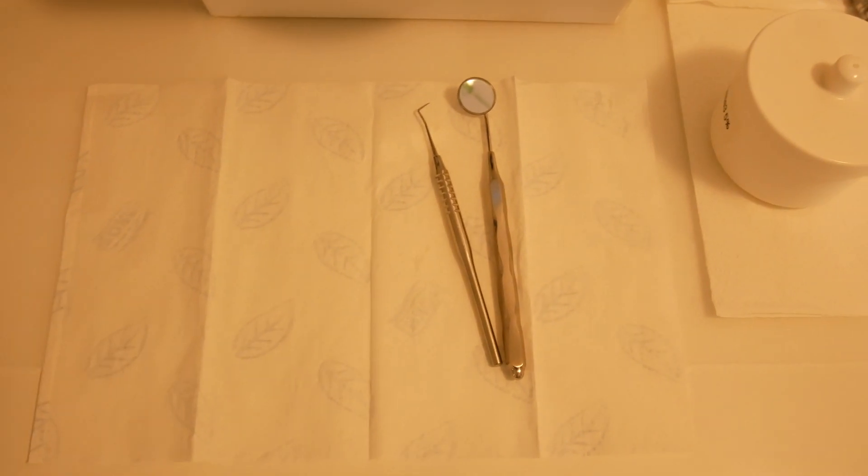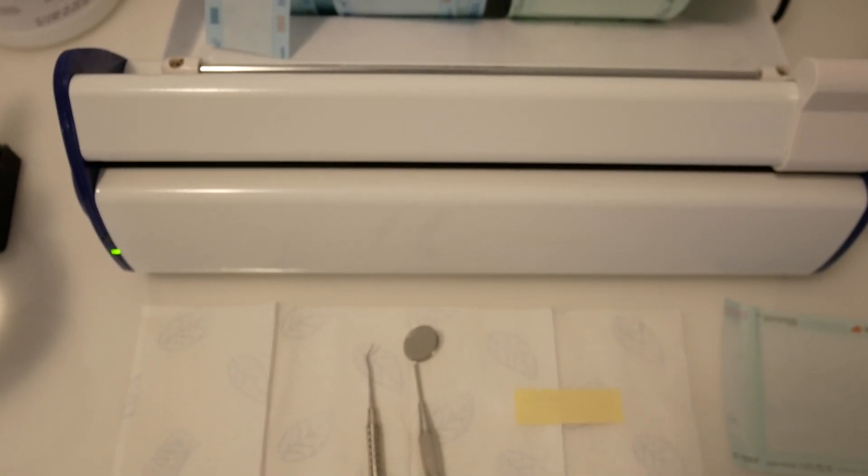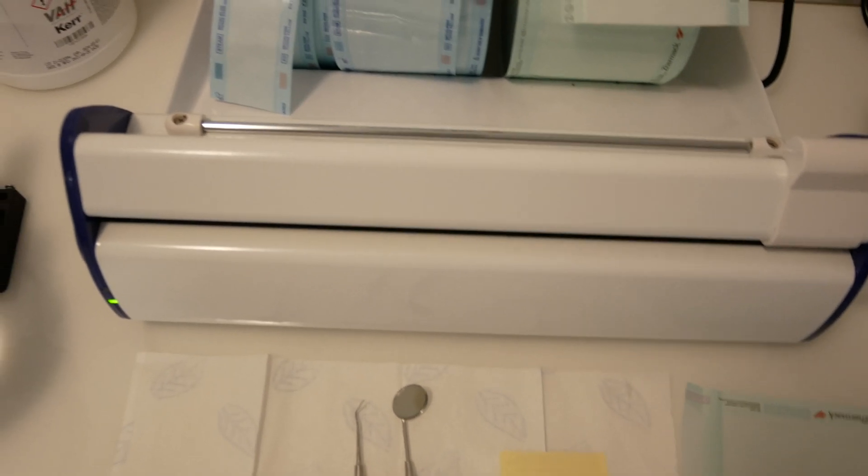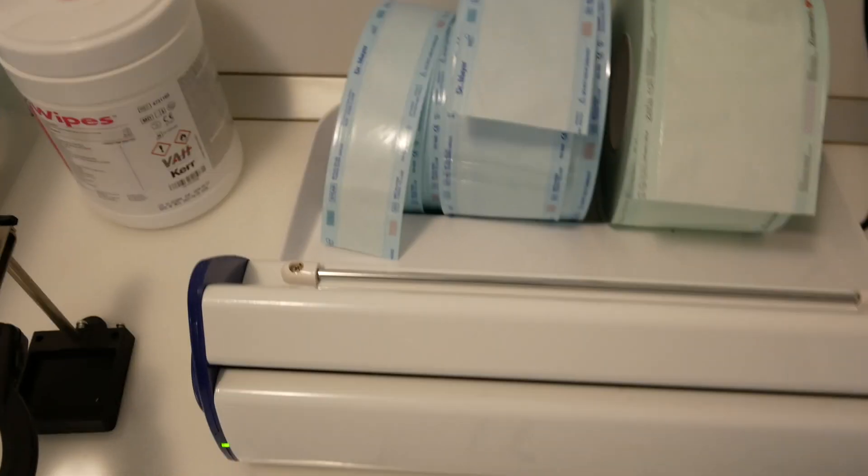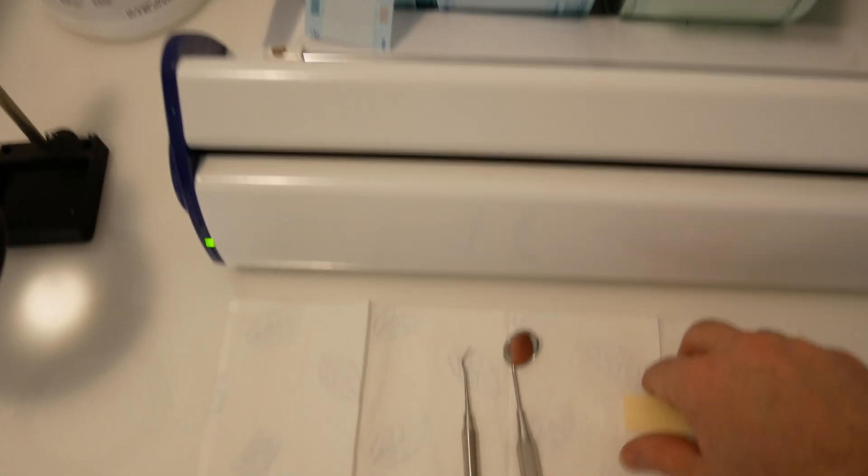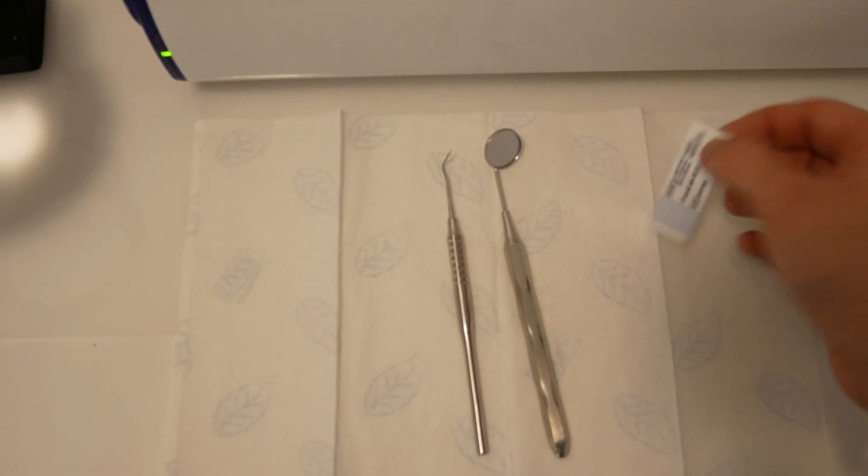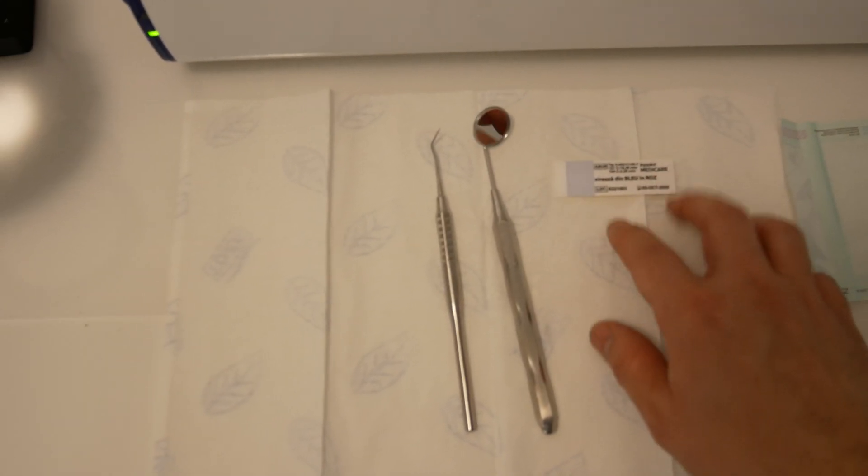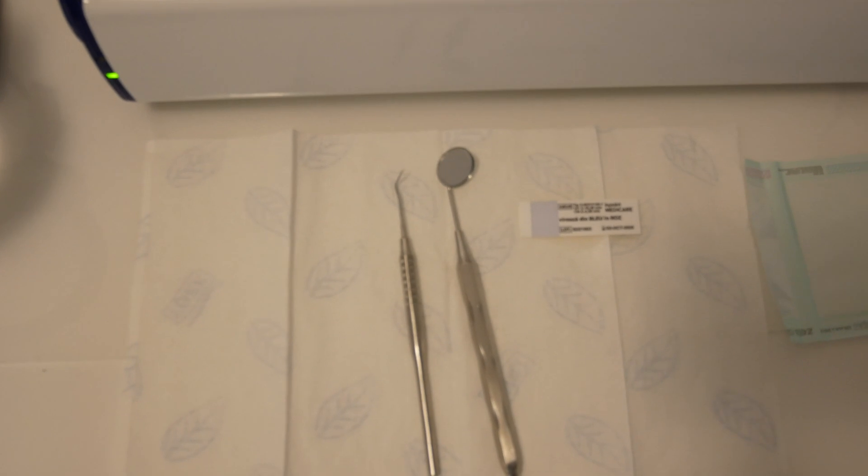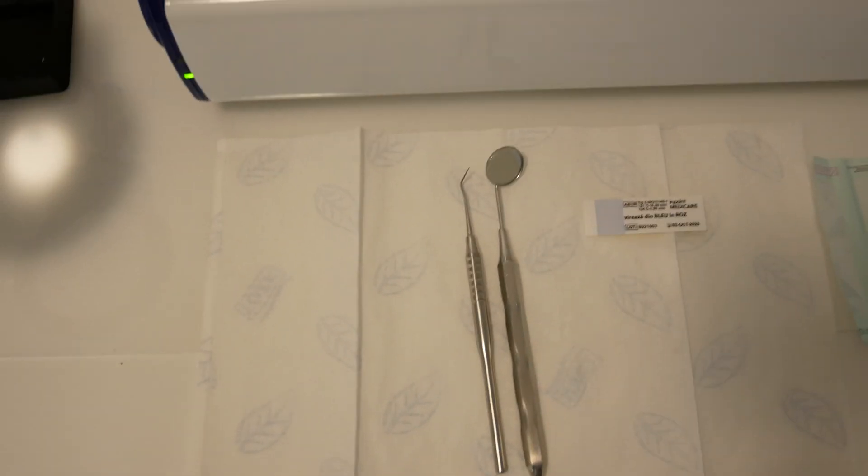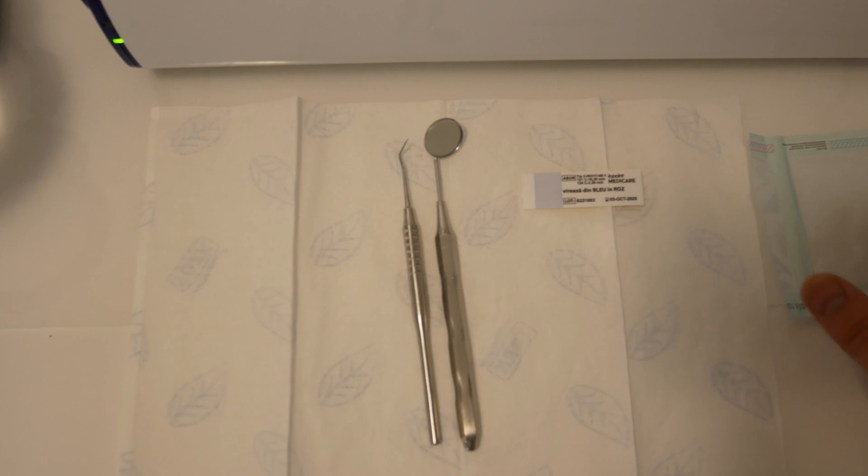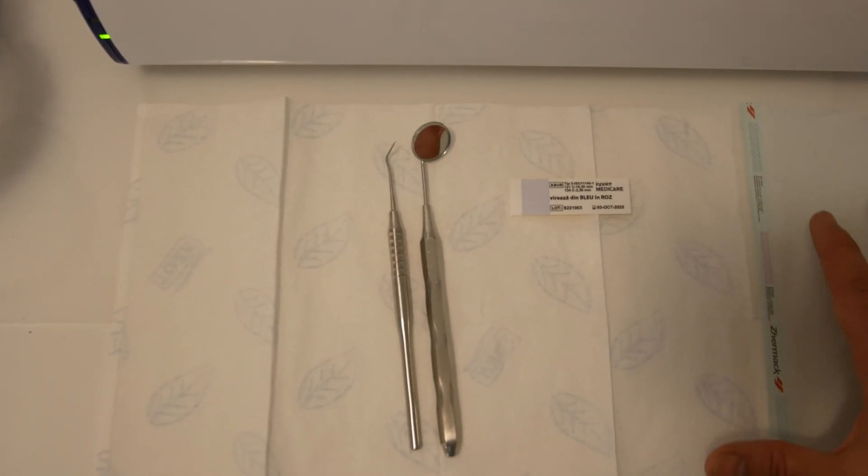Now we can package the instruments. For packaging, I'm using a normal dental sealer with pouches on a roll. I'm inserting in each and every package a class 5 steam sterilization marker. This will show me that the inside of the bag has been sterilized.